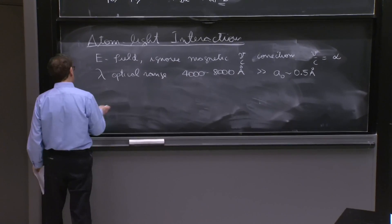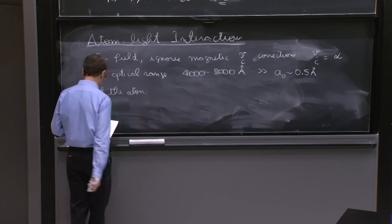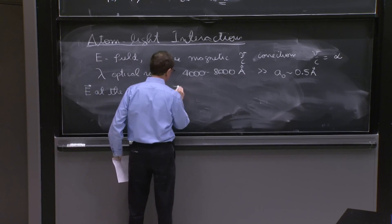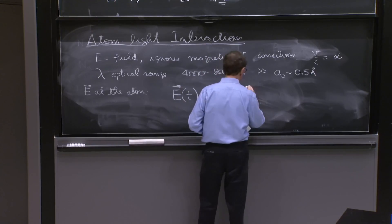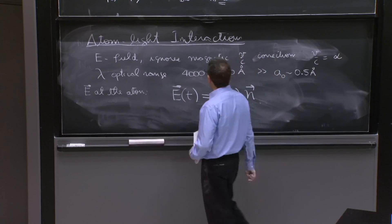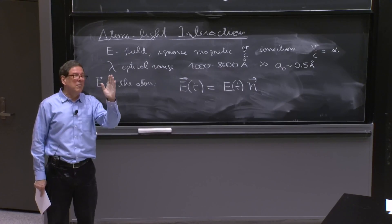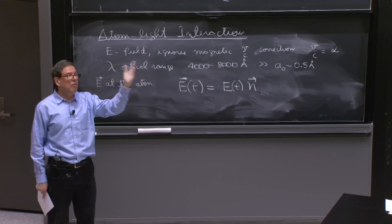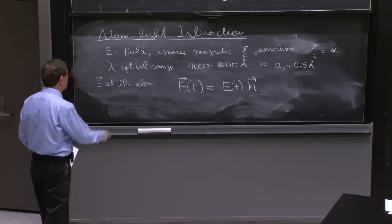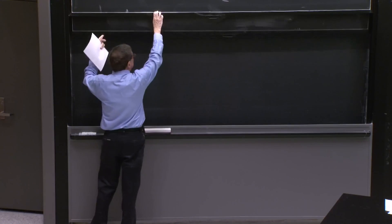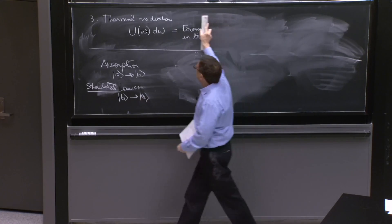So we will think of the electric field at the atom. Our electric field — a bit of notation — will depend on time, and it will be a real function of time times a unit vector. This will get more interesting because we're going to be dealing with thermal radiation, so eventually this vector n will be pointing in various directions and we will average it over all directions, because thermal radiation comes with all polarizations and in all directions. That will happen next time as we wrap up this discussion.